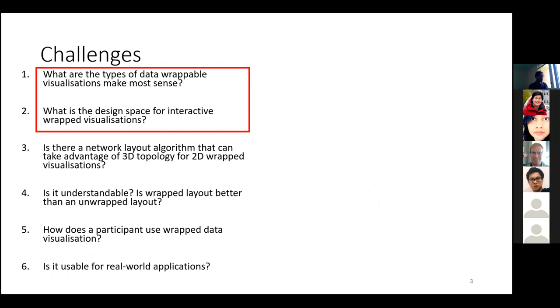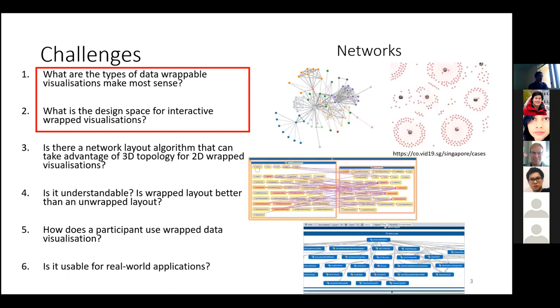We aim to explore the following six challenges in this research project. What are the types of data wrappable visualizations make most sense? And what is the design space for interactive wrapped visualization? Apart from map projection, one of the data types we found most useful and interesting to be wrappable is networks. Networks is a type of relational data. It is used to represent friendships between people and community structures of human contacts, such as face-to-face meetings, conferences during COVID-19, and software architecture diagrams that capture software relationships between components, classes, and functions. How to find a high-quality layout of node-link representations of the network and how to improve its usability is an open question.